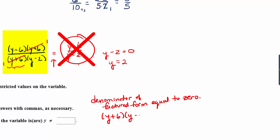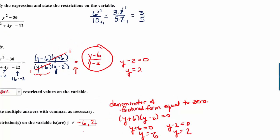So y plus 6 times y minus 2 equals 0 can only happen if either y plus 6 is 0 or y minus 2 is 0. Well, y plus 6 equals 0 would mean that y is negative 6, and y minus 2 equals 0 would mean that y is equal to positive 2. So the restrictions on the variable are negative 6 and positive 2.